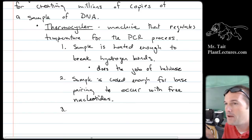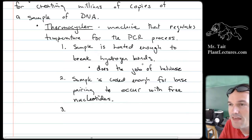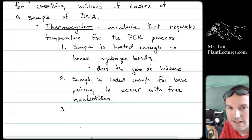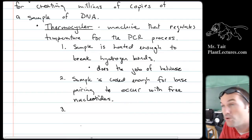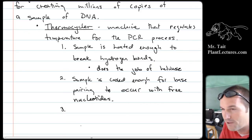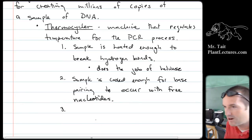DNA polymerase has a problem though: if we heat the sample up enough to break hydrogen bonds, that enzyme gets totally denatured. So there's no way to use regular DNA polymerase. What we actually do is use a very specific DNA polymerase extracted from a prokaryote that lives in hydrothermal vents — it's called Taq polymerase.